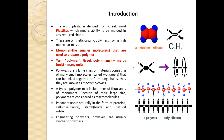Polymers are a large class of material consisting of many small molecules called monomers that can be linked together to form a long chain. Thus they are known as macromolecules. The polymers occur naturally in the form of proteins, cellulose, starch, and natural rubber — these are called natural polymers. The polymers derived in a laboratory are called synthetic polymers. Generally, engineering polymers are usually synthetic polymers.